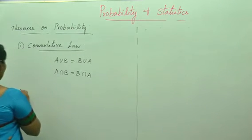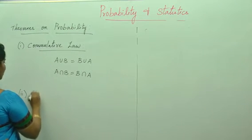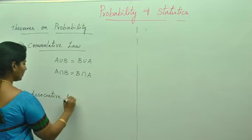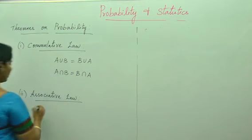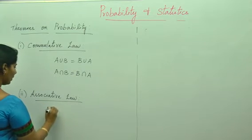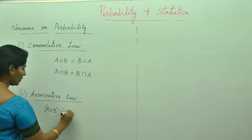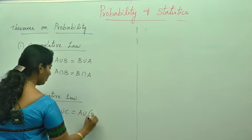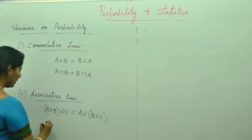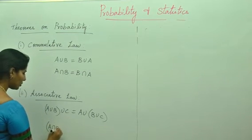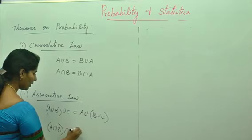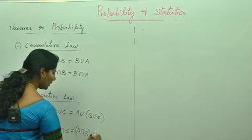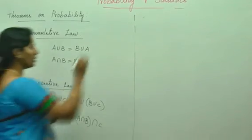Next, associative law. For union: A union of B union C is equals to A union B union C. Similarly for intersection: A intersection of B intersection C can be written as A intersection B intersection C. This is the associative law.